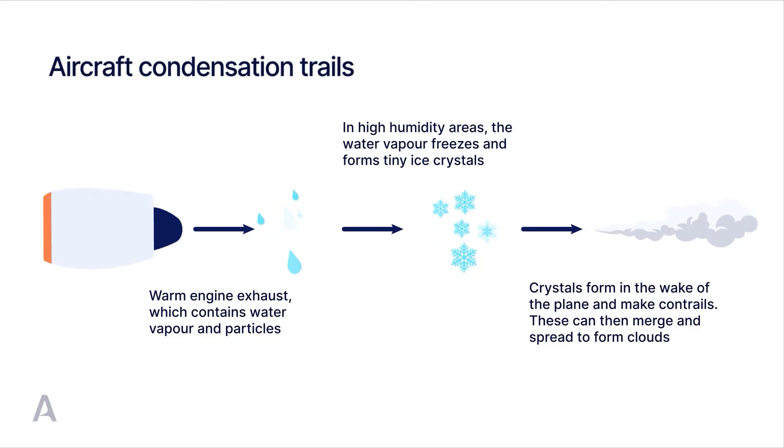When contrails and cirrus clouds are present during the day, they reflect some of the incoming shortwave solar radiation back into space and thereby help to cool the atmosphere. However, contrails also trap outgoing longwave radiation emitted from the Earth's surface, causing the atmosphere to become warmer.